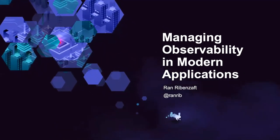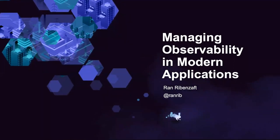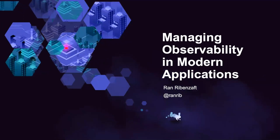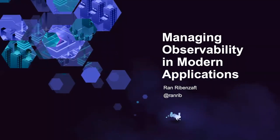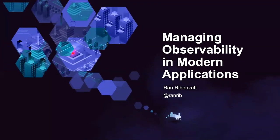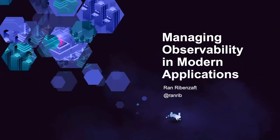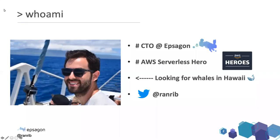Thank you, Matt. I really appreciate everyone joining. I'm going to talk today about managing observability and several subjects. Just a few words about myself: I'm currently the CTO at Epsilon and also one of the co-founders. I'm also an AWS serverless hero, which means I can say a lot of things about serverless. I talk a lot about serverless topics, cloud native and things like that on Twitter. You're more than welcome to follow me.